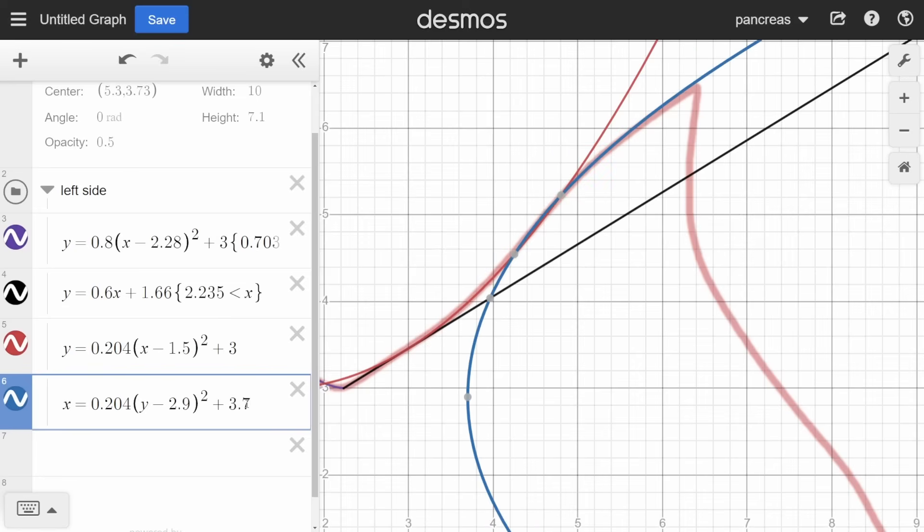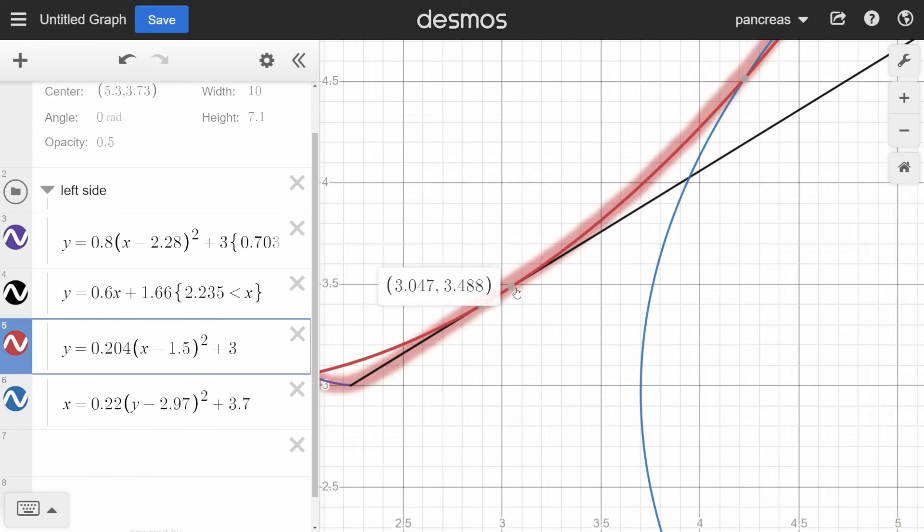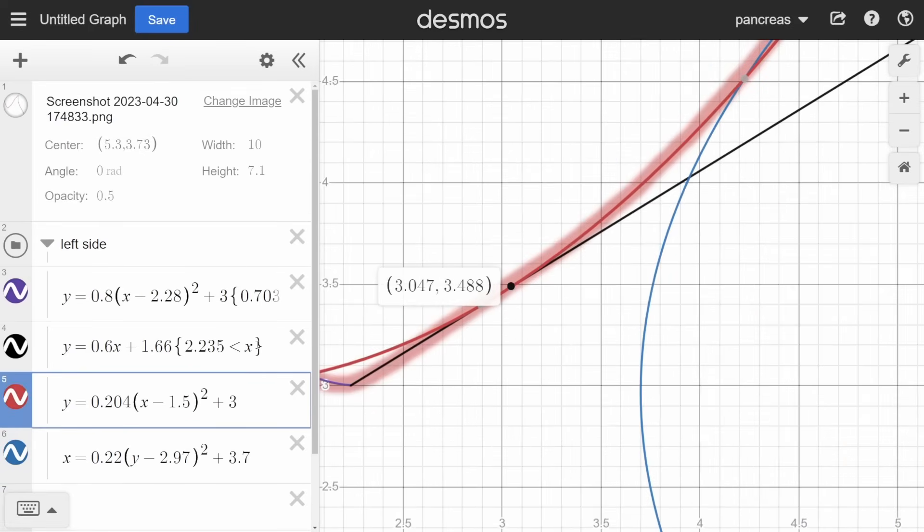If you remember, we can flip a function on its side by swapping x and y. Now we set the appropriate domain and ranges.